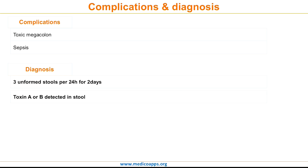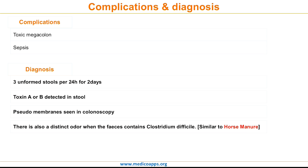We can further confirm the diagnosis by detection of Toxin A or Toxin B in the stool. On colonoscopy, we can see the pseudomembrane plaque, which is yellowish-white over the colon. There is also a distinct odour in the stool of patients with Clostridium difficile infection — the smell is like horse manure. Such a smell in a patient who has undergone long antibiotic therapy, along with symptoms of colitis, points towards Clostridium difficile.